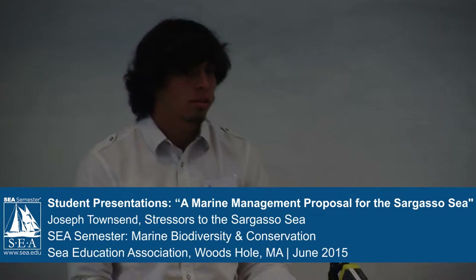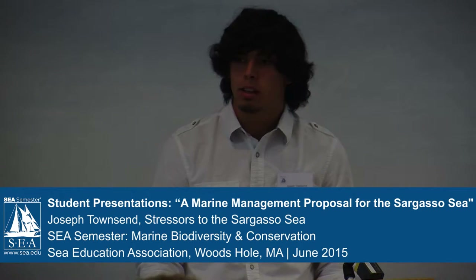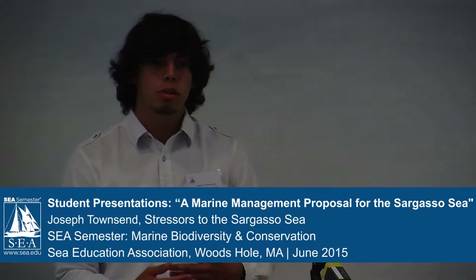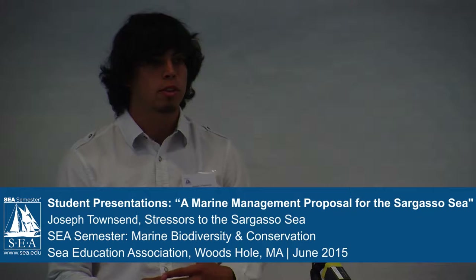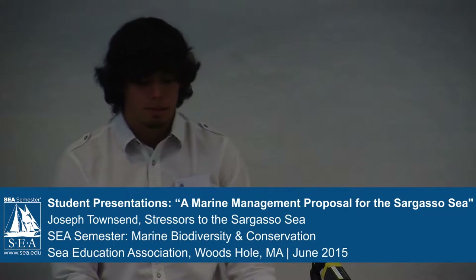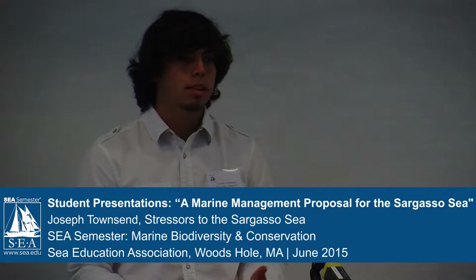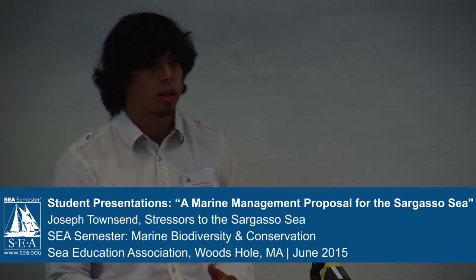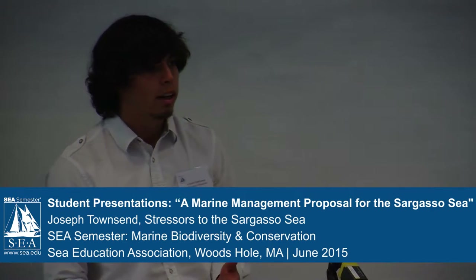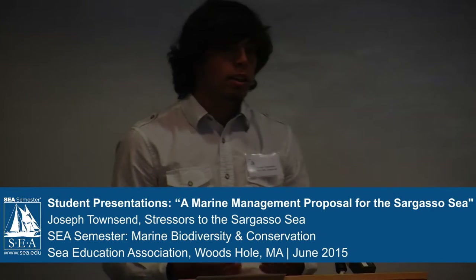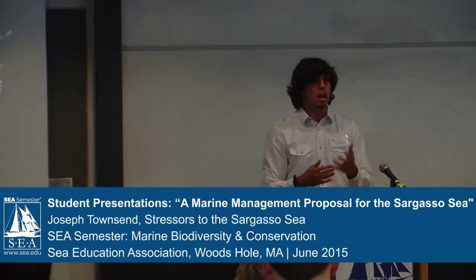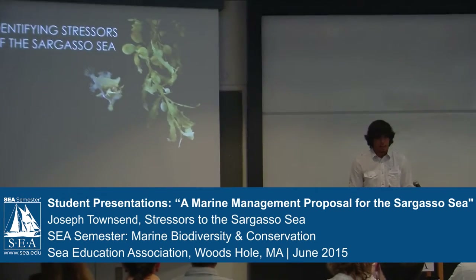So what does that mean? Well, the way we're going to define it in this presentation is any sort of process or condition that will reduce biodiversity or reduce natural resources in the Sargasso Sea. And so when we're planning policy around stressors on biodiversity, the first step will be to identify exactly what these stressors are. And what we found initially is that this can be a bit of a challenge if we're going to simply try to list a comprehensive list of stressors on the Sargasso Sea.